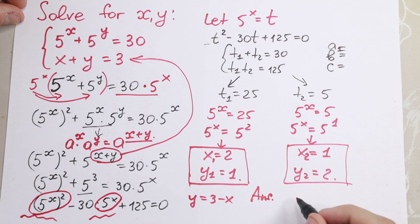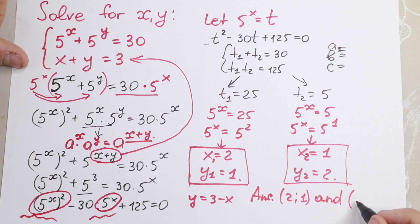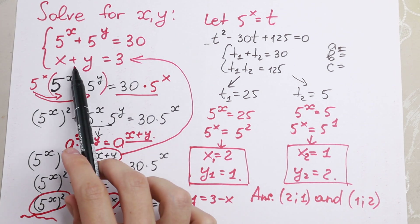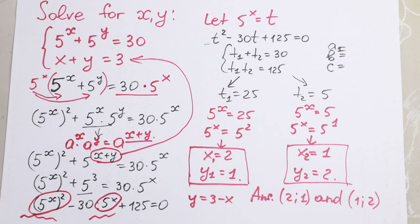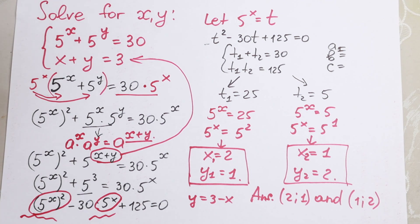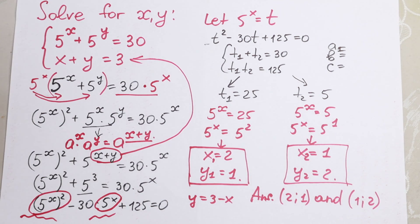Of course we can write the answer to this problem. First pair: x equals 2 and y equals 1. Second pair: x equals 1 and y equals 2. And this is the solution to this interesting question. Moreover, we can check the answer. If we plug in 2 and 1, the second equation is satisfied: 2 plus 1 equals 3. And for the first equation: 5 squared plus 5 to the first power equals 25 plus 5, which equals 30. So doesn't matter which way you assign x and y — you'll have the same answer.